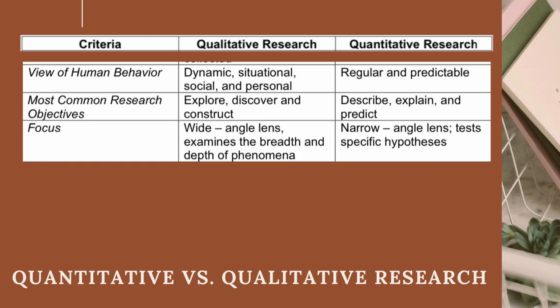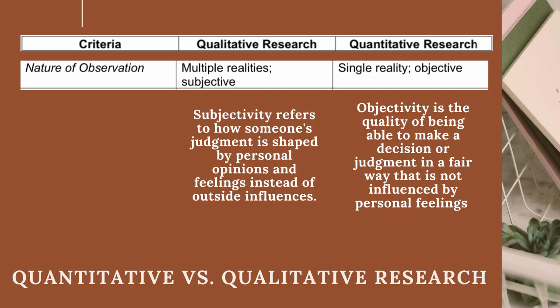The focus of qualitative research uses a wide-angle lens, examining the breadth and depth of phenomena. The focus of quantitative research uses a narrow-angle lens to test specific hypotheses. Qualitative research's nature of observation involves multiple realities — it is subjective. Subjectivity refers to how someone's judgment is shaped by personal opinions and feelings instead of outside influences. Quantitative research's nature of observation is a single reality — it is objective. Objectivity is the quality of being able to make a decision or judgment in a fair way that is not influenced by personal feelings.